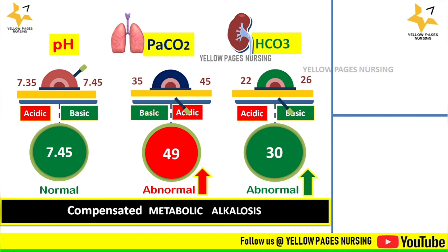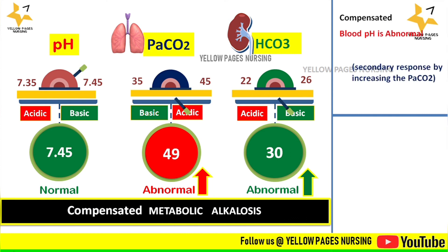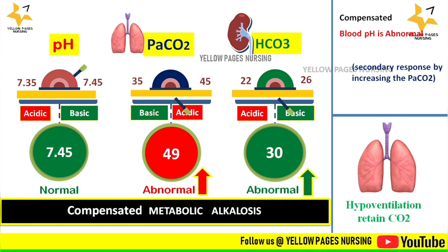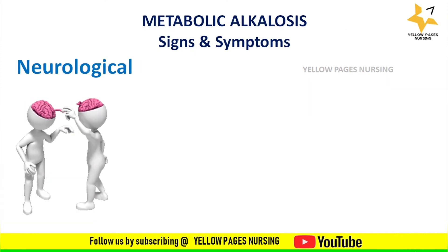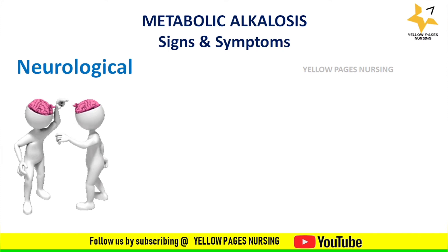In compensated metabolic alkalosis, the blood pH is normal and the secondary response involves increasing PaCO2 through hypoventilation, where carbon dioxide is retained, resulting in PaCO2 above the normal range.